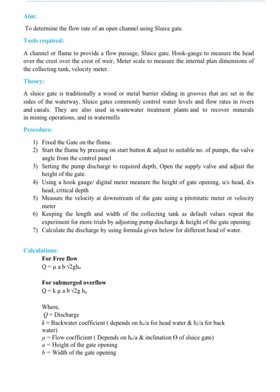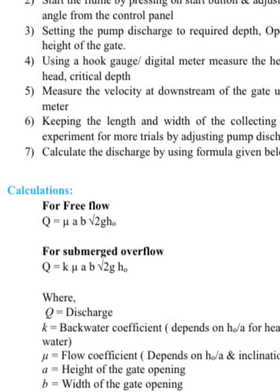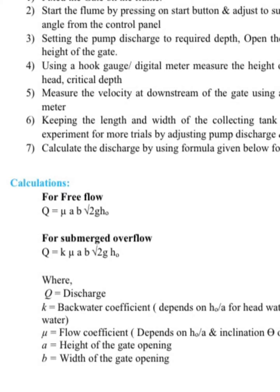For finding the flow rate at free flow and submerged flow, we'll use the formula Q = μab√(2gh₀), where h₀ is the upstream head, a is the height of gate opening, b is the width of channel, μ is the flow coefficient, and Q is the discharge.